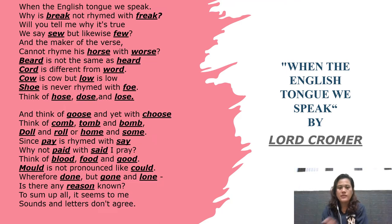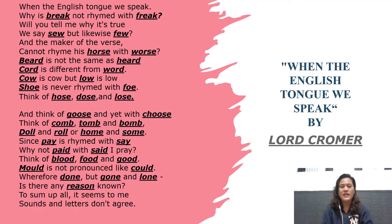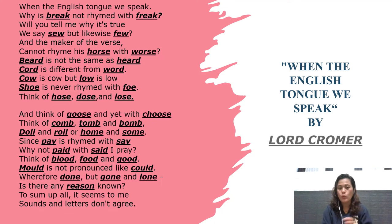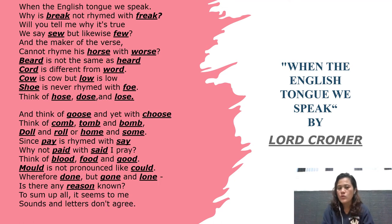Next is 'course' — circular ellipse shape — and the other one is 'worse.' It's like you're smiling when you say it. Next is 'beard' — ear, ear, ear — and the other one is 'heard' — er sound. Then 'cord' — circular — and then 'word.' Then 'cow,' 'low,' 'shoe,' 'foe.'